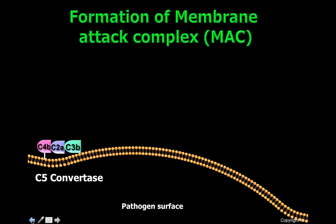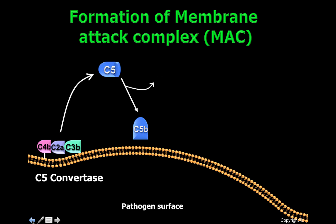The C5-convertase, as its name states, will cleave C5, generating C5B and C5A. C5A is the most potent chemoattractant molecule — it is able to recruit neutrophils to the site of infection and activate macrophages. This is also reviewed in another video.